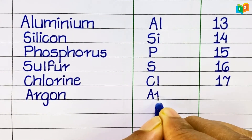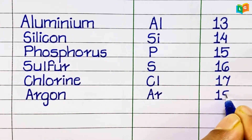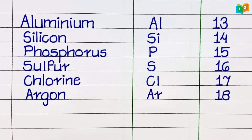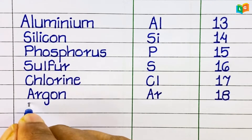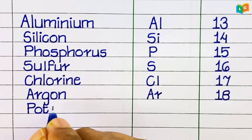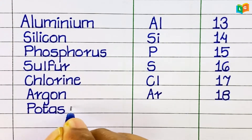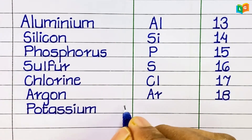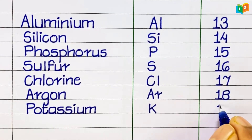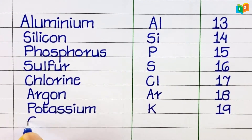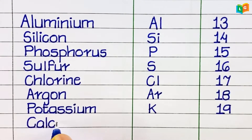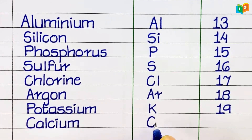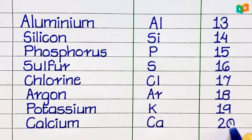Chlorine, symbol Cl, atomic number 17. Potassium, symbol K, atomic number 19. Calcium, symbol Ca, atomic number 20.